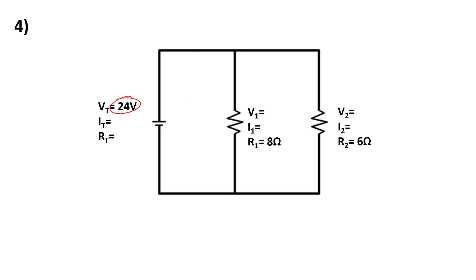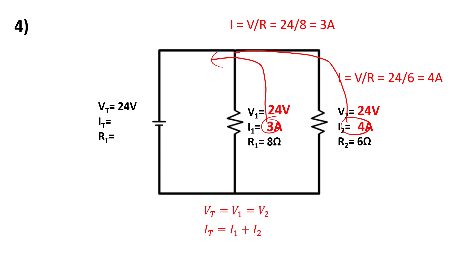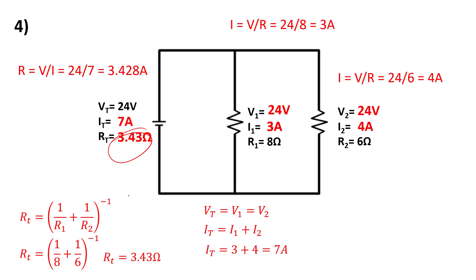Now let's do full circuit problems. Here we have 24 volts. Since I know the voltage there, voltage is the same across all branches: VT equals V1 equals V2, so that's 24 volts each. After that I can use Ohm's Law to solve for current at each branch. Then I follow the currents back — 3 amps down one branch, 4 amps down another, so that must have been 7 amps total before they split. Going back to Ohm's Law I get RT of about 3.43 ohms. As a final check, 1/R1 + 1/R2 inverted should equal RT, and it does.